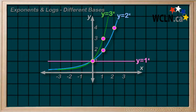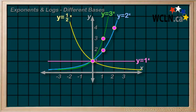So let's try a base below 1. Let's try 1 half. And in this case, we see that y is getting smaller and smaller as the x gets bigger. And we call that exponential decay.